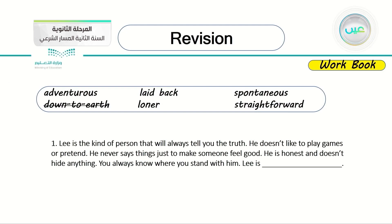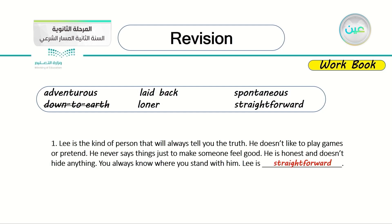Number one: Lee is the kind of person that will always tell you the truth. He doesn't like to play games or pretend. He never says things just to make someone feel good. He is honest and he doesn't hide anything — you always know where you stand with him. So what's the fitting description for Lee's personality? Lee is straightforward. What's on his mind he will say to you.